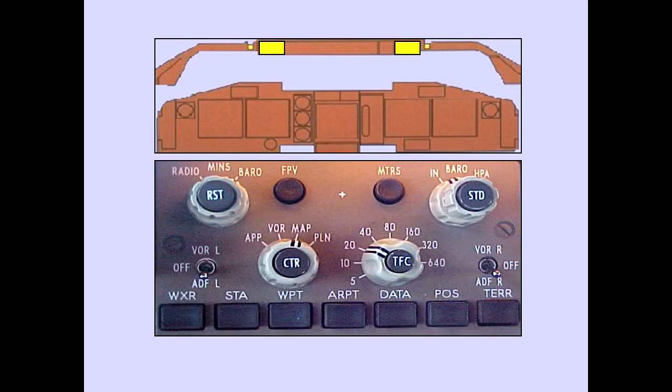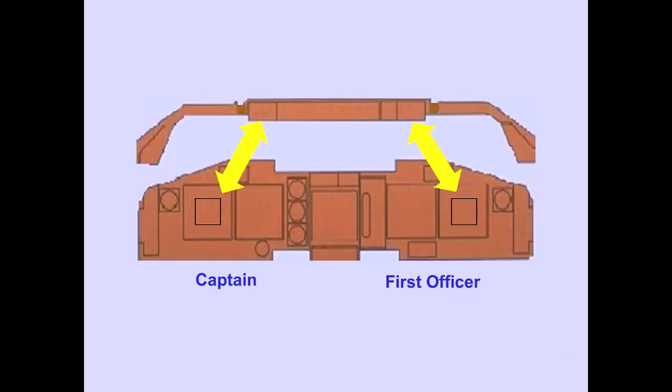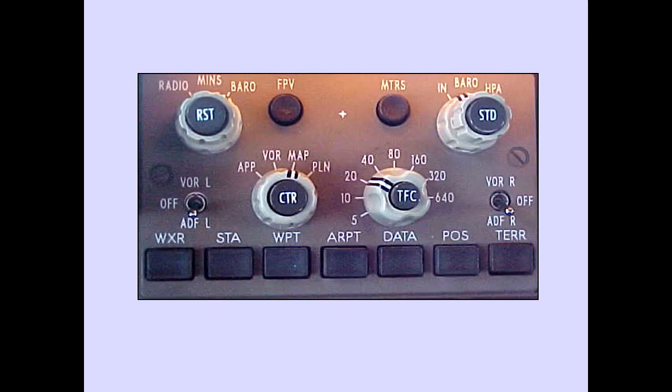The left EFIS control panel controls the captain's PFD, and the right panel controls the first officer's PFD. The EFIS control panel is used to select decision height, minimum descent altitude, altimeter metric reference, and barometric pressure.